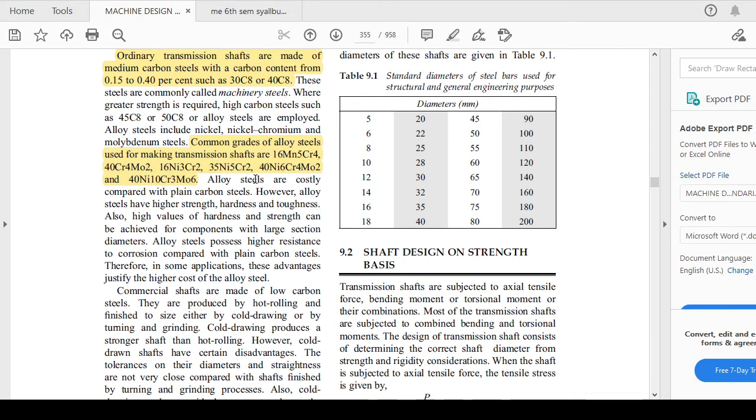Some common grade alloy steels for making transmission shafts are these. Alloy steels are costly compared to plain carbon steel, so it depends on the purpose where you are utilizing this particular kind of shaft. Now, the first topic of our concern is shaft design on the basis of strength.